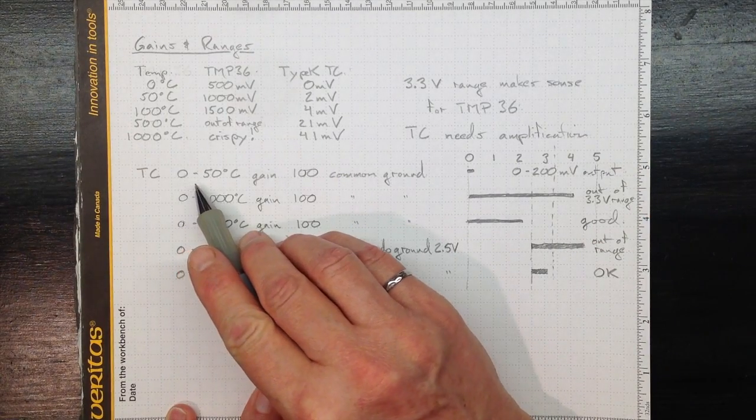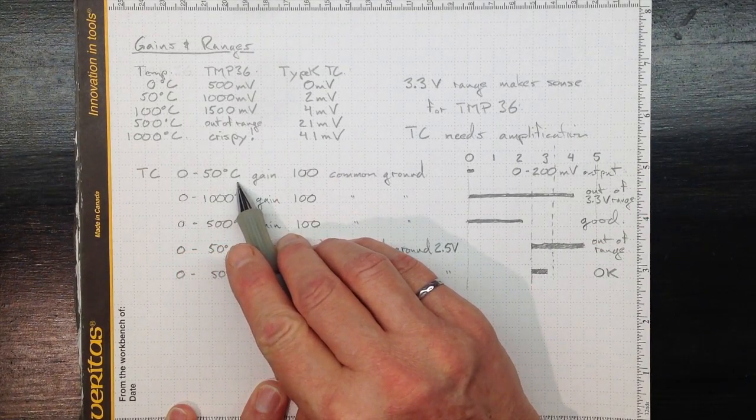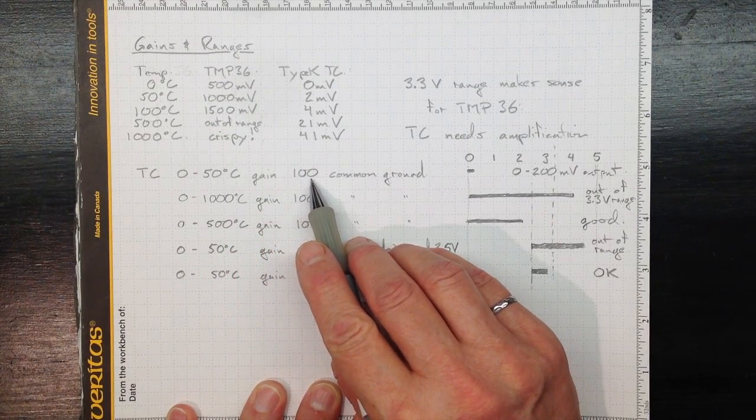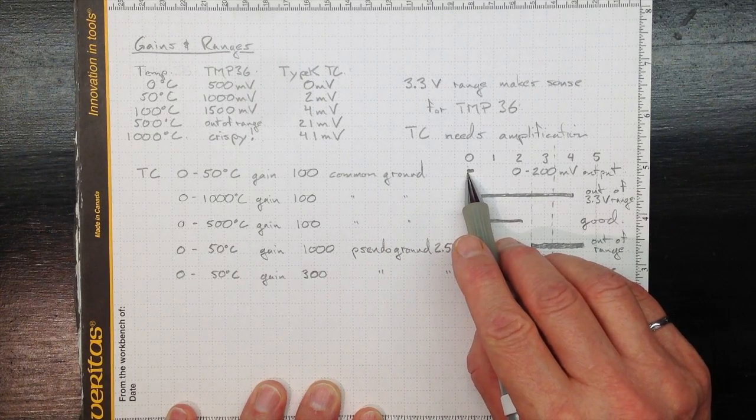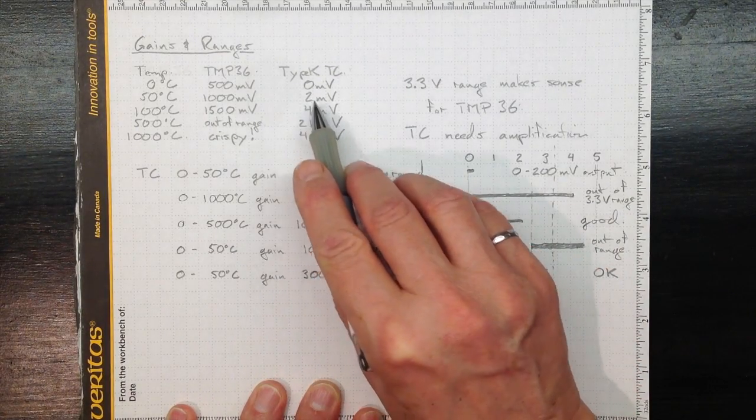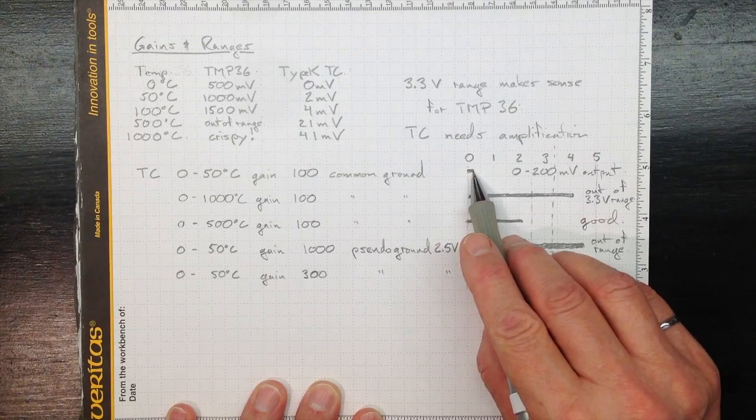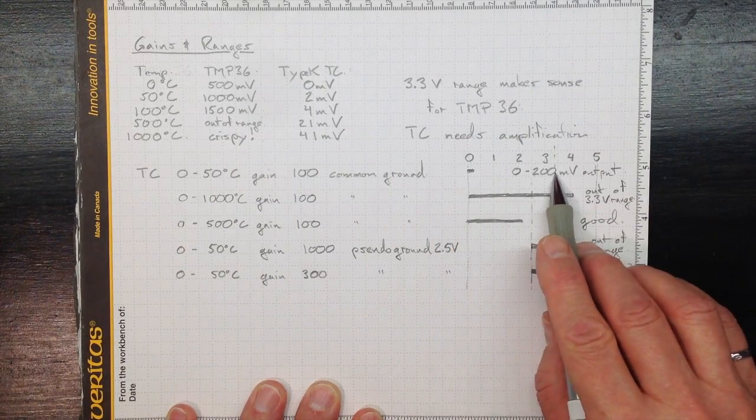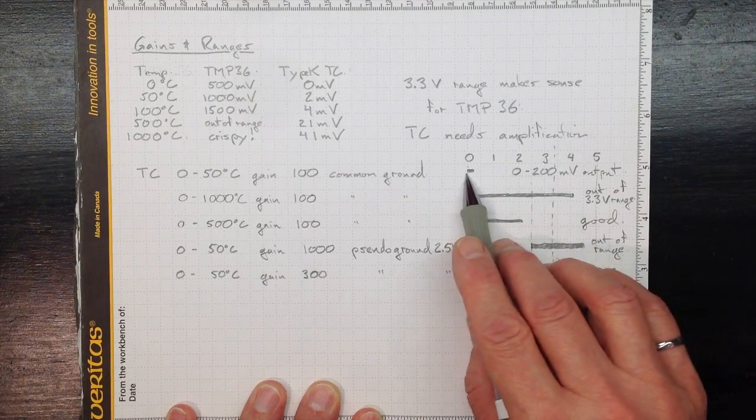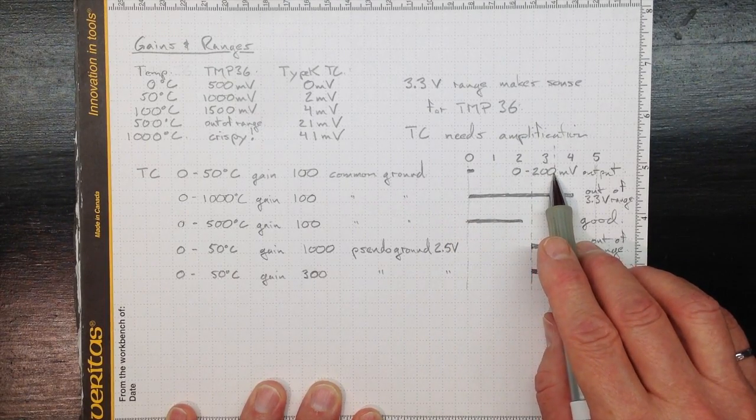If we were only interested in the zero to fifty degrees Celsius range and we used a gain of a hundred on our amplifier with a common ground, we'd go from zero up to two times a hundred or about two hundred millivolts. That's really not using very much of that zero to 3.3 volt range. That'll give us poor resolution.